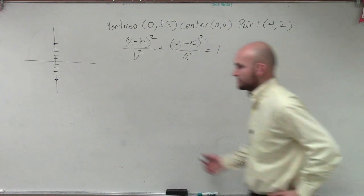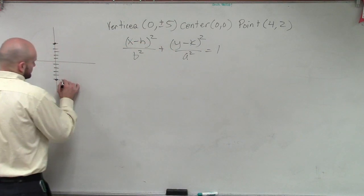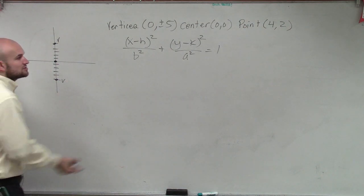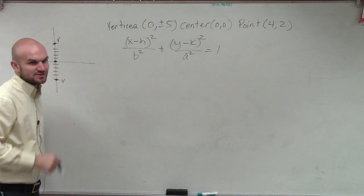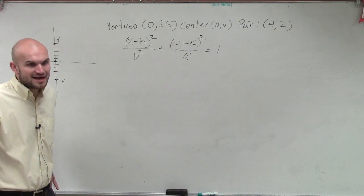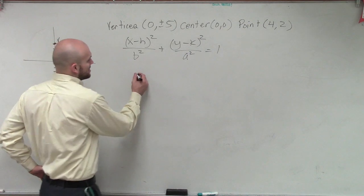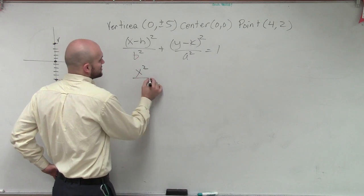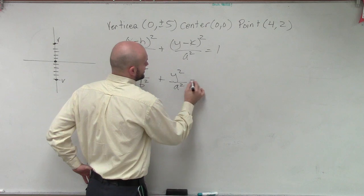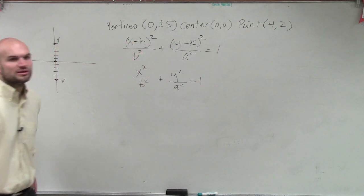Remember, if it's vertical, your major axis a is going to be under your y. If it's horizontal, the a will go under your x. So we know here's our two vertices, and that's all we've got. Now we also know the center is at zero, zero.